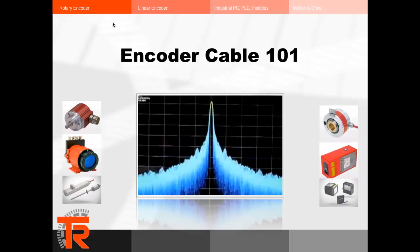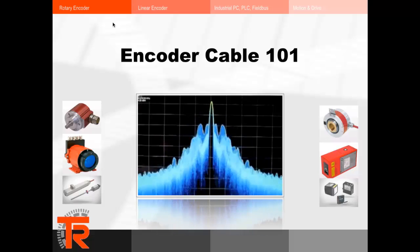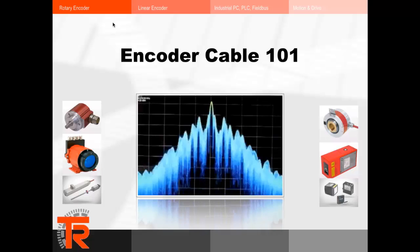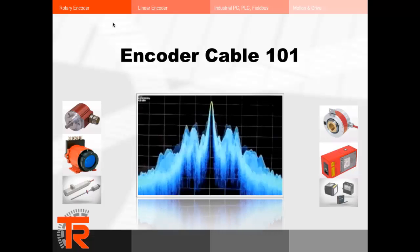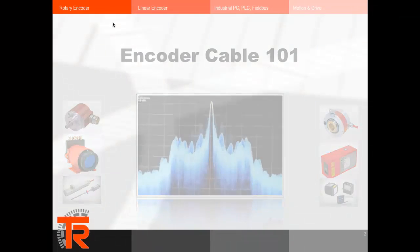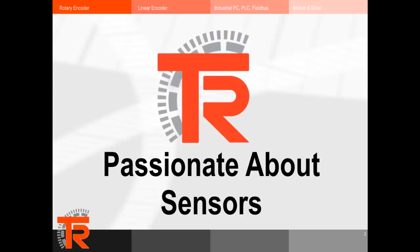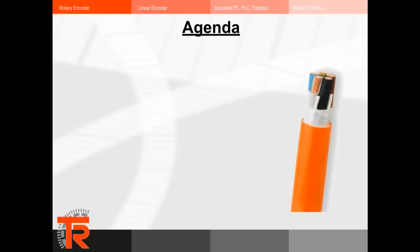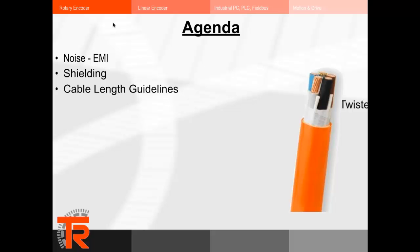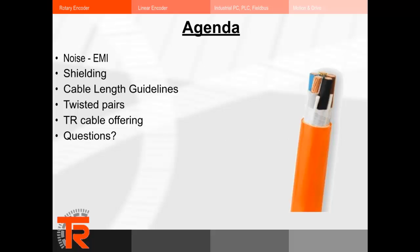Hello and thank you for joining me. My name is Kevin Condorado. I'm the Technical Support Supervisor here at TR Electronic, and this will be a brief webinar on Encoder Cable 101. At TR, we are passionate about sensors. Our agenda today: we're going to talk about noise and EMI, shielding, proper cabling practices, cable length guidelines, twisted pair cabling, our TR cable offering, and we'll have a brief question and answer period.